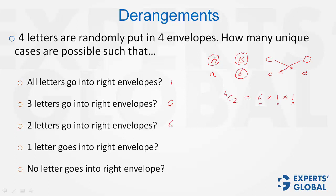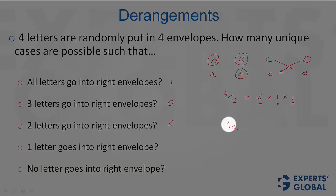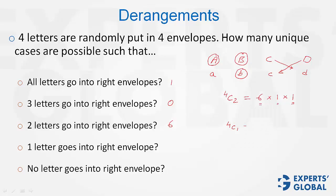One letter goes into the right envelope. So, once again, 4C1. One letter out of 4 that goes into the right envelope can be selected in 4C1 or 4 ways. And now, imagine you have four letters A, B, C, and D, and one letter has been selected. Let's say A goes into the right envelope. Of course, it could be A, B, C, or D. That's why four cases.